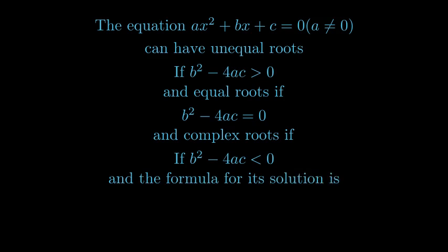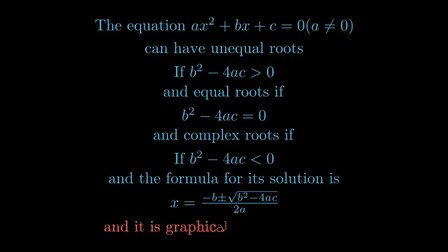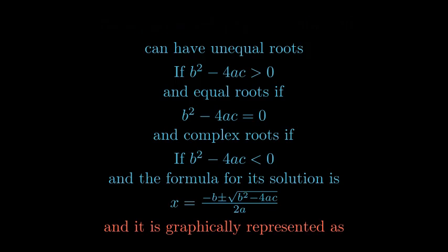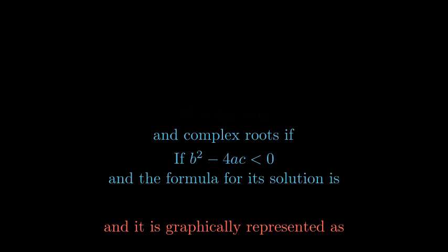The formula for its solution can be given as x = (-b ± √(b² - 4ac)) / 2a. This is graphically represented, and b² - 4ac is called the discriminant of the quadratic equation, which determines the nature of its roots.